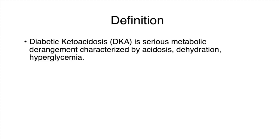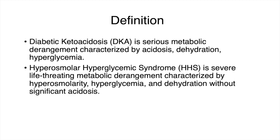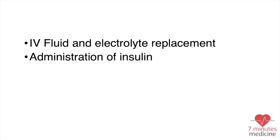DKA is a serious metabolic derangement characterized by acidosis, dehydration, and hyperglycemia. HHS is almost the same, except it is characterized by hyperosmolarity and not much acidosis. For the management, the most important things are IV fluid replacement and giving insulin.